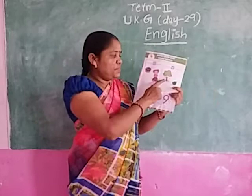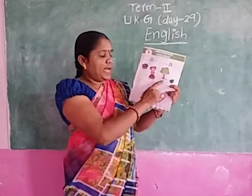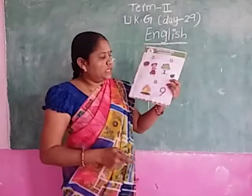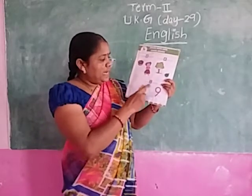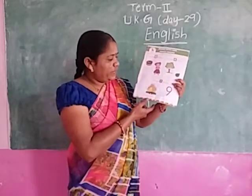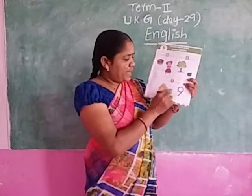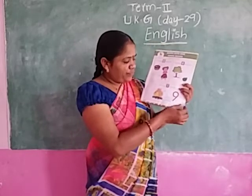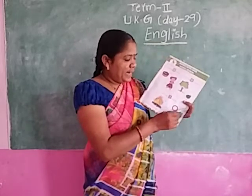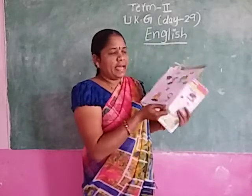Vowel E words: T-R-E-A-T-L-E. Vowel I words: F-I-R-E. N-I-N-E.